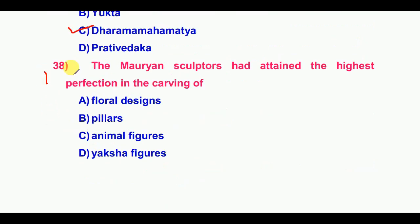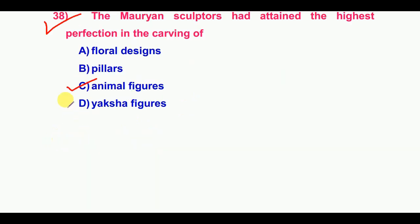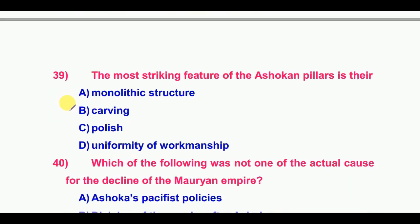Thirty-eighth question: The Mauryan sculptors attained the highest perfection in the carving of — the answer is animal figures. Thirty-ninth question: The most striking feature of the Ashokan pillars is their polish.